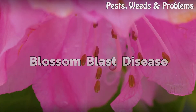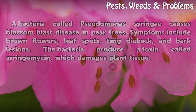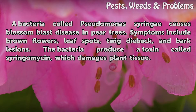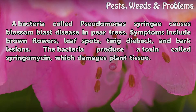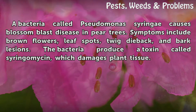Blossom Blast Disease. A bacteria called Pseudomonas syringae causes Blossom Blast Disease in pear trees. Symptoms include brown flowers, leaf spots, twig dieback, and bark lesions. The bacteria produce a toxin called syringomycin, which damages plant tissue.